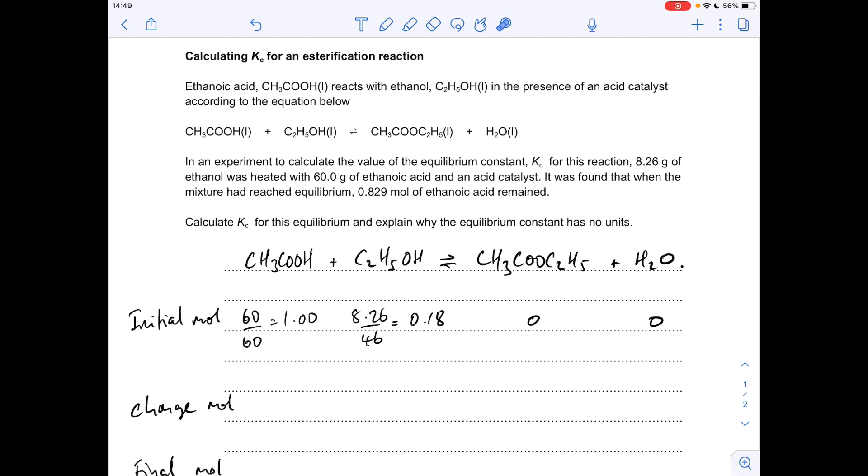I've started the first bit of the calculation, working out the initial moles of the ethanoic acid and ethanol. Mass over MR, so it's one mole of ethanoic acid has reacted with 0.18 moles of ethanol. Obviously at the very start of the reaction you won't have any products formed, so they're both at zero.